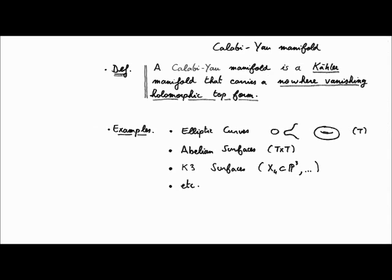In the case of K3 surfaces, changing the volume form doesn't give much freedom — the only thing you can really do is multiply it by some primitive root of unity, at least in the canonical case. A non-symplectic automorphism is an automorphism of your Calabi-Yau manifold that sends the volume form to some non-trivial root-of-unity multiple of itself. For the rest of this talk, all my manifolds will be two-dimensional K3 surfaces, and I'll look at automorphisms of order 3.